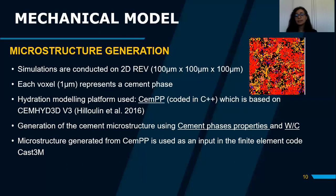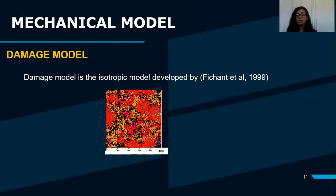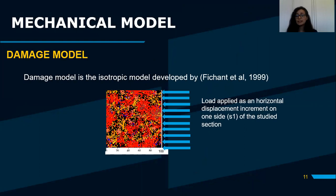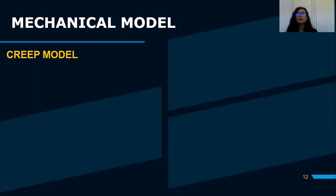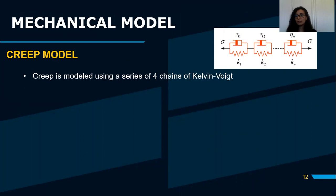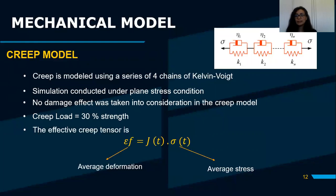CASTEM is the code used to model the mechanical behavior of a structure. The damage model used is the isotropic model, developed in the works of Fichant in 1999. On the generated microstructure, a load is applied as a horizontal displacement increment on one side while the other side is fixed. The strength is calculated from this model. The creep model uses a series of Kelvin chain elements. Simulations are conducted under plane stress conditions with no damage effect. The creep load is 30% of the strength to remain in the primary creep regime. The effective creep tensor is calculated as the relation between average deformation and average stress.